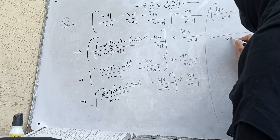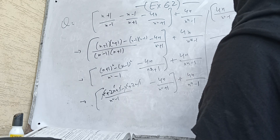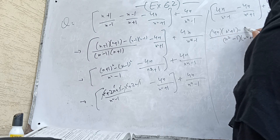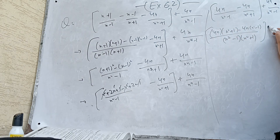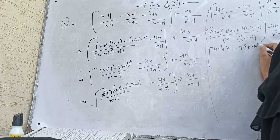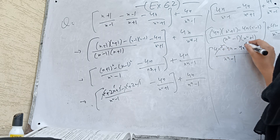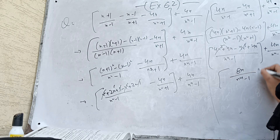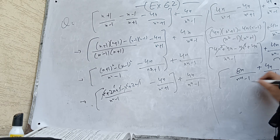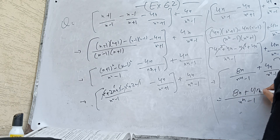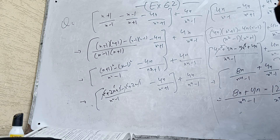Taking the LCM of (x²-1) and (x²+1), we get 4x(x²+1) minus 4x(x²-1) plus 4x(x⁴-1). This gives us 4x³+4x minus 4x(x⁴-1) plus 4x(x⁴-1), which simplifies to 8x/(x⁴-1) plus 4x/(x⁴-1). Taking LCM as (x⁴-1), we get 8x+4x = 12x/(x⁴-1).